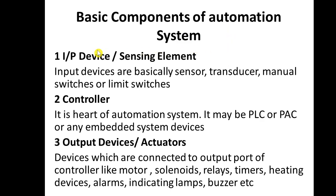Now let's see the basic components of an automation system. There are three types: first, input devices or sensing elements; second, controllers; and third, output devices or actuators. Input devices take a signal and give it to the controller. Examples include sensors, transducers, manual switches, and limit switches.